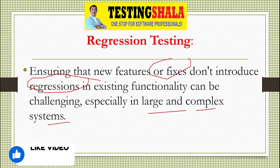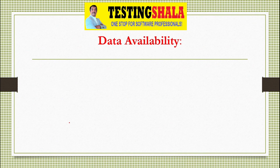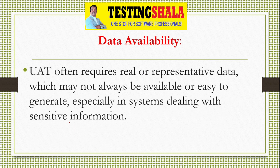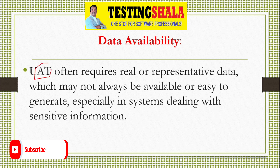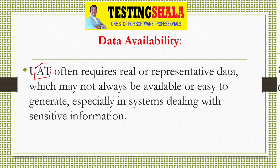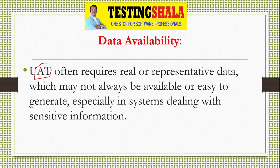The next challenge is data availability, which is one of the biggest challenges in software testing and equally applicable to UAT. During UAT we have to simulate real-world data, but availability of such data for the UAT team or end users is a big challenge. Getting production data, which contains sensitive information, is difficult, so we must simulate similar test data and observe how the application behaves with it.